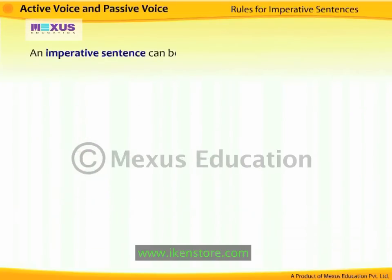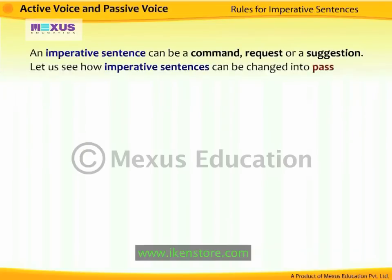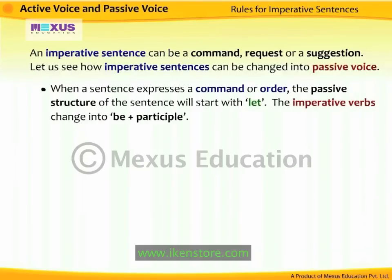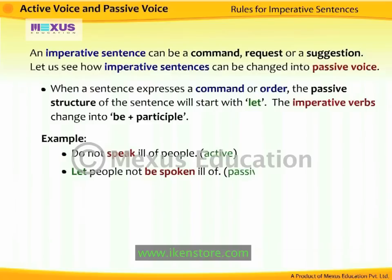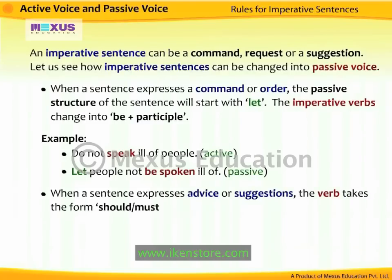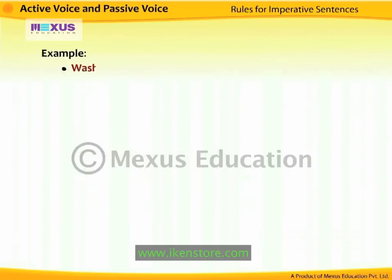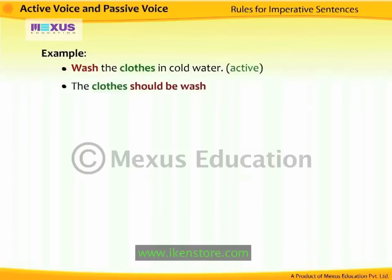An imperative sentence can be a command, request, or suggestion. When a sentence expresses a command or order, the passive structure starts with 'let,' and the imperative verbs change into 'be + past participle.' For example, 'Do not speak ill of people' becomes 'Let people not be spoken ill of.' When a sentence expresses advice or suggestions, the verb takes the form 'should/must + be + past participle,' and the object of the imperative sentence becomes the subject. For example, 'Wash the clothes in cold water' becomes 'The clothes should be washed in cold water.'